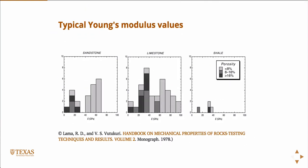So there's some typical Young's modulus values for different rocks: sandstone, limestone, shale. The colors represent the porosity values, with light colors being low porosity and darker colors being high porosity.